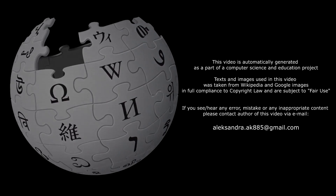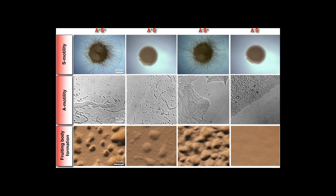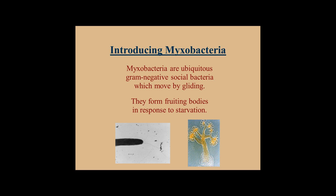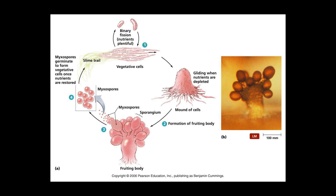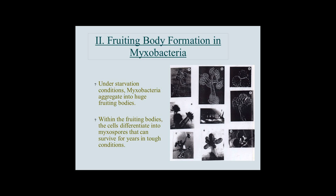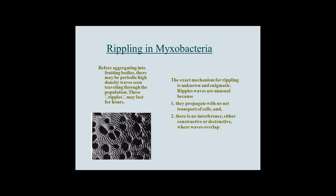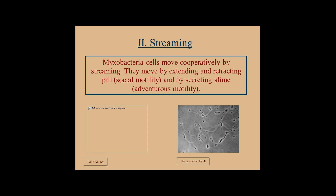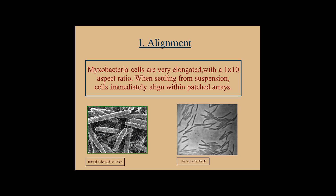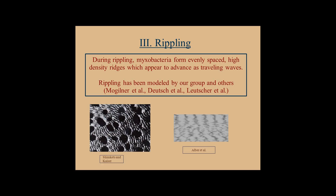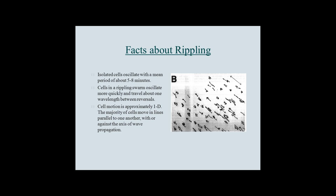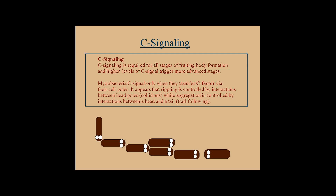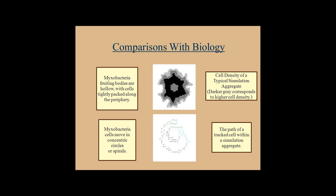The Myxobacteria are a group of bacteria that predominantly live in the soil and feed on insoluble organic substances. They have very large genomes relative to other bacteria, typically around 9 to 10 million nucleotides, except for Archangium myxobacter and Vulgatobacter. One of the Myxobacteria, Minicystis rosea, has the largest bacterial genome with over 16 million nucleotides. The second largest is another Myxobacteria, Sorangium cellulosum. Myxobacteria are included among the delta group of proteobacteria, a large taxon of gram-negative forms.